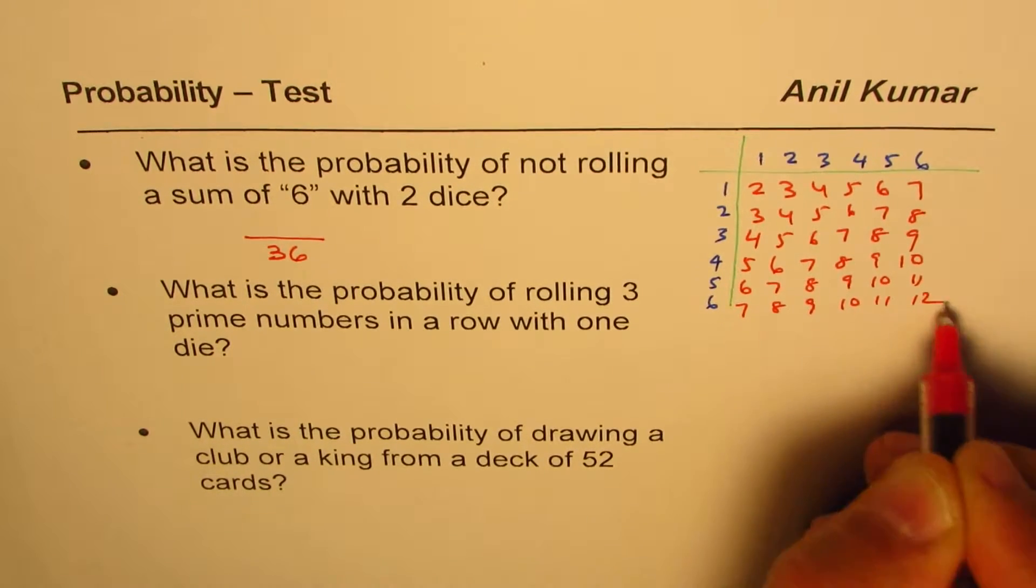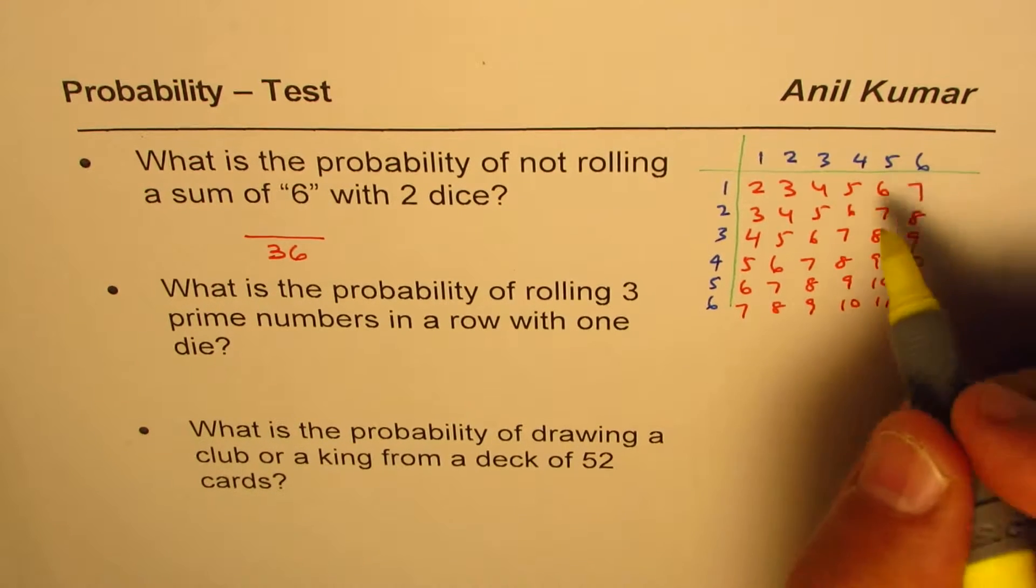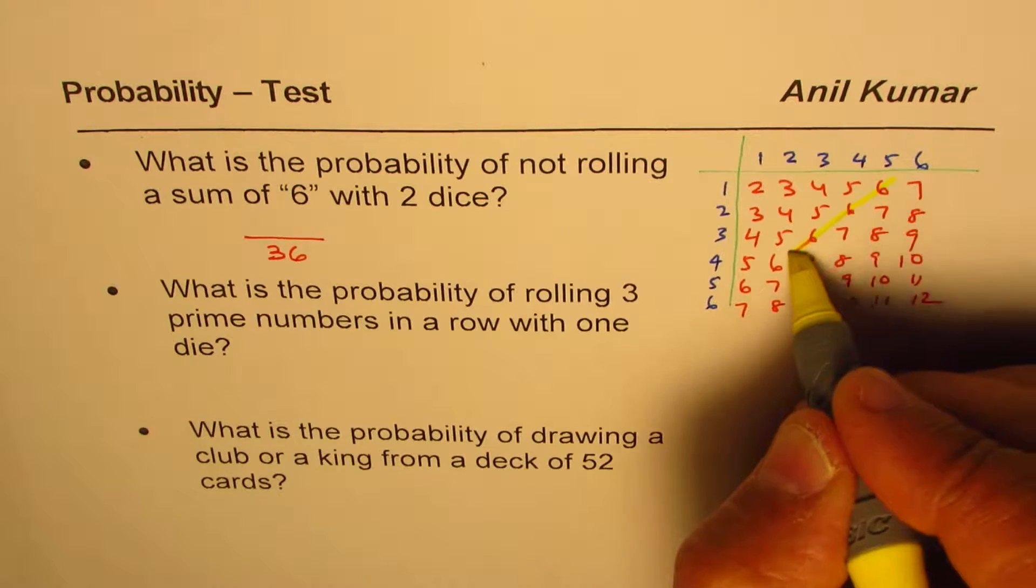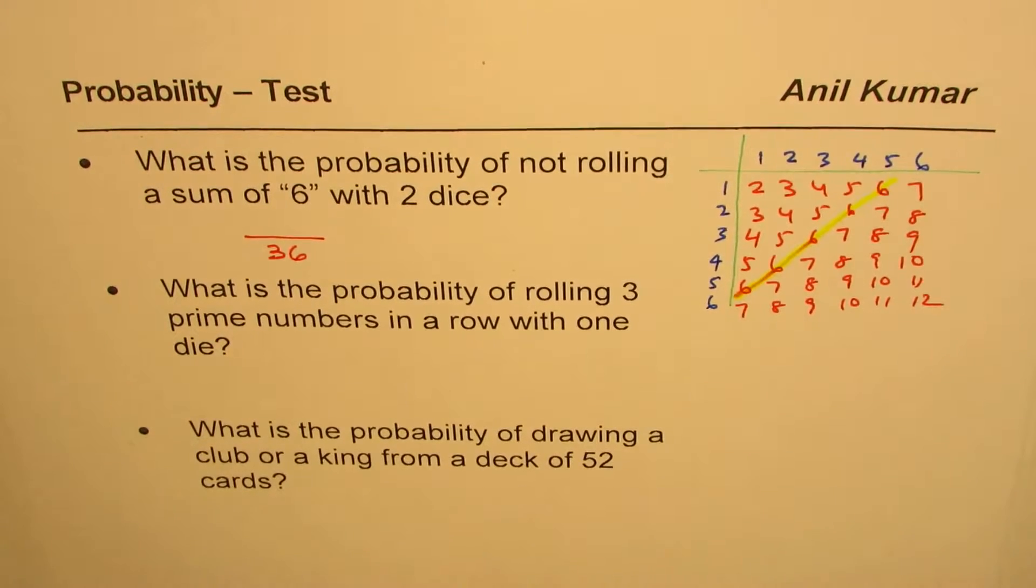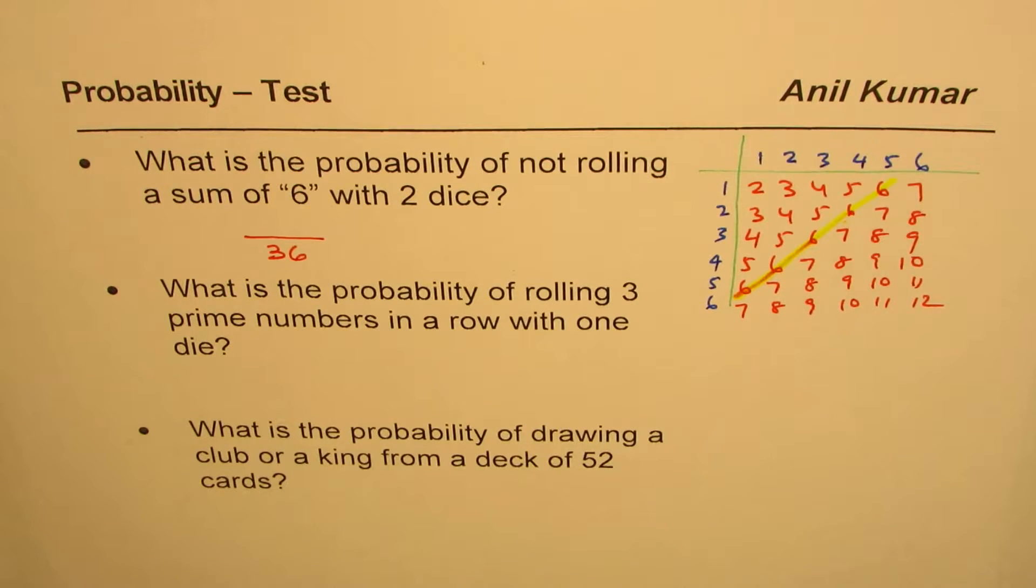5, 6, 7, 8, 9, 10. And then we have 6, 7, 8, 9, 10, 11. And 7, 8, 9, 10, 11, 12. So how many numbers are there with 6 as the sum? So these are the numbers diagonally, do you see that? That diagonal is 6.